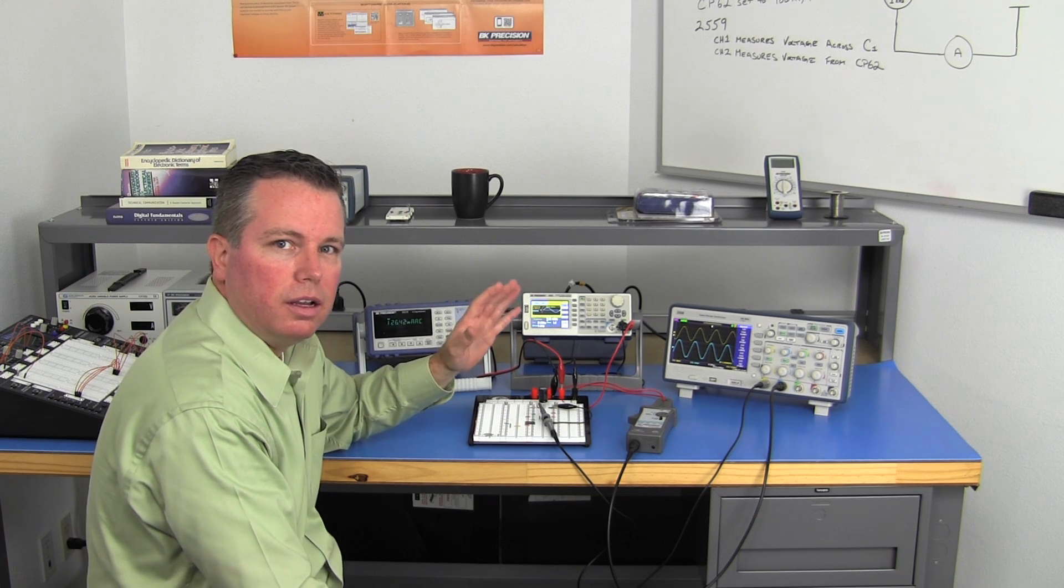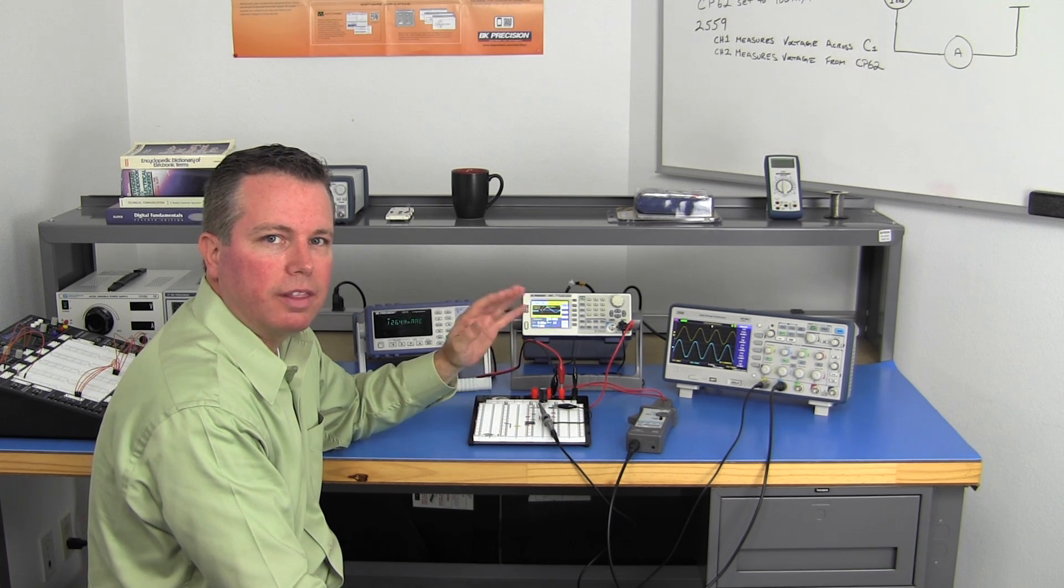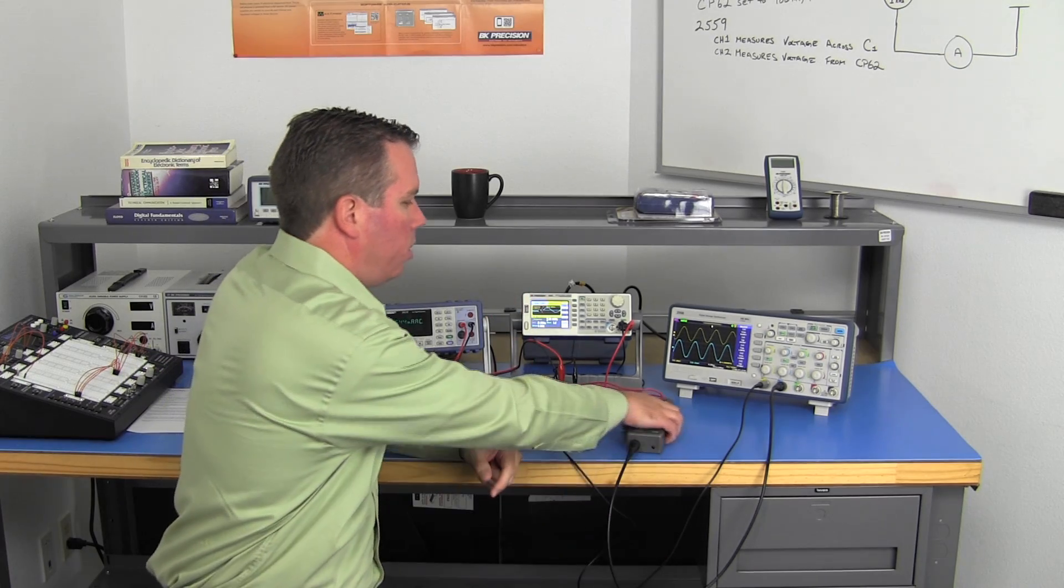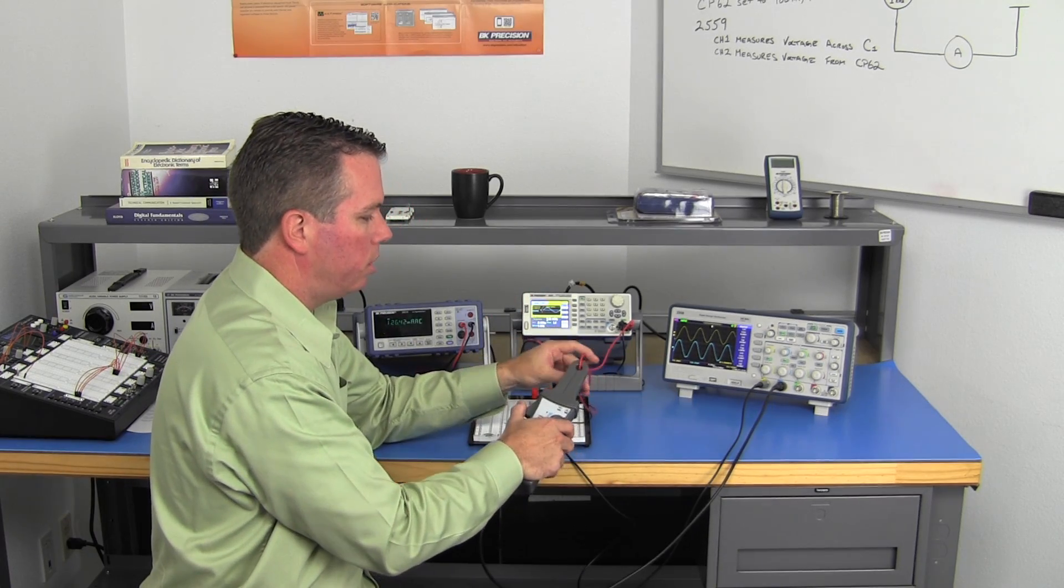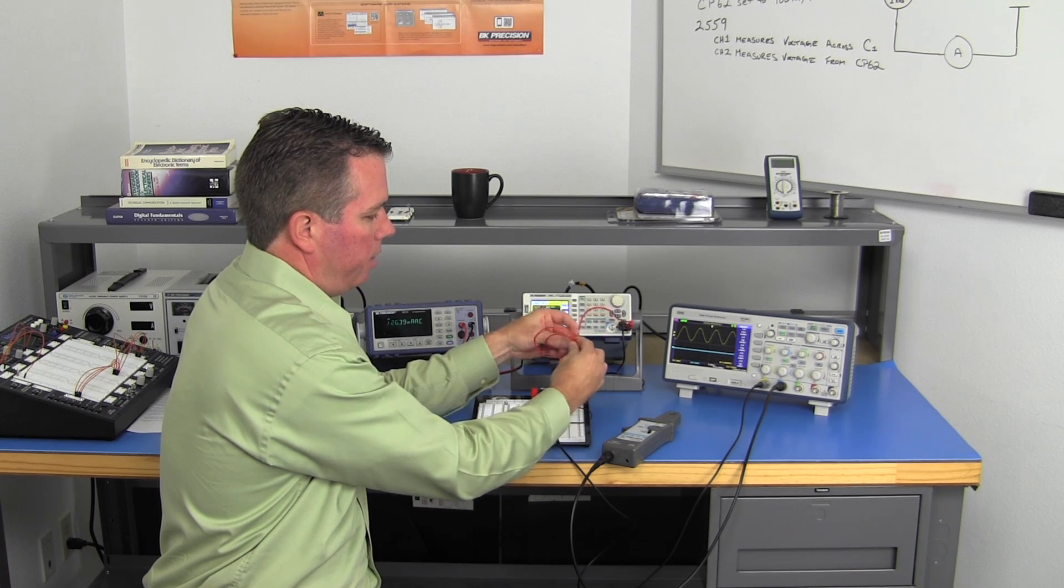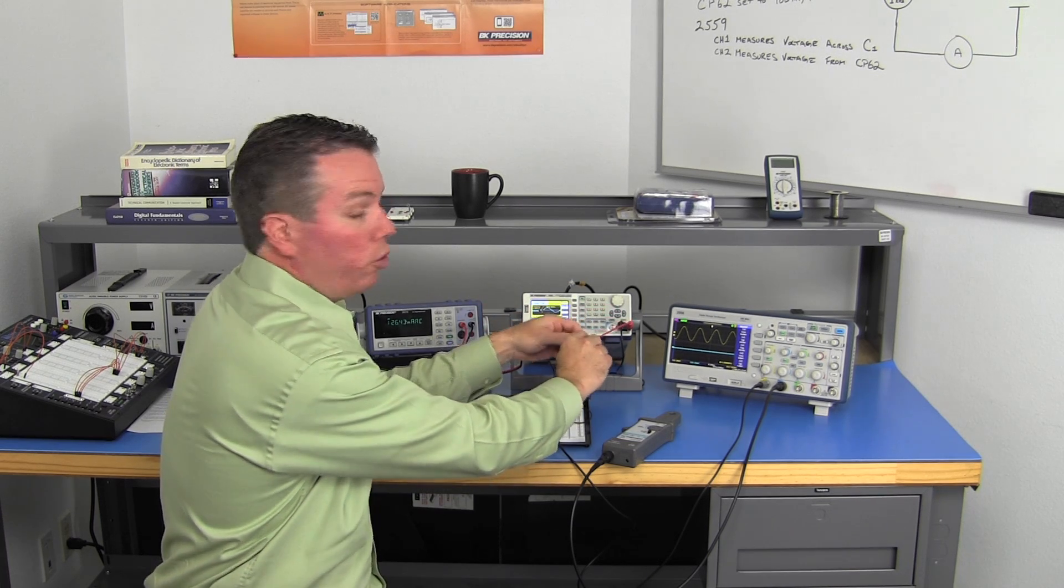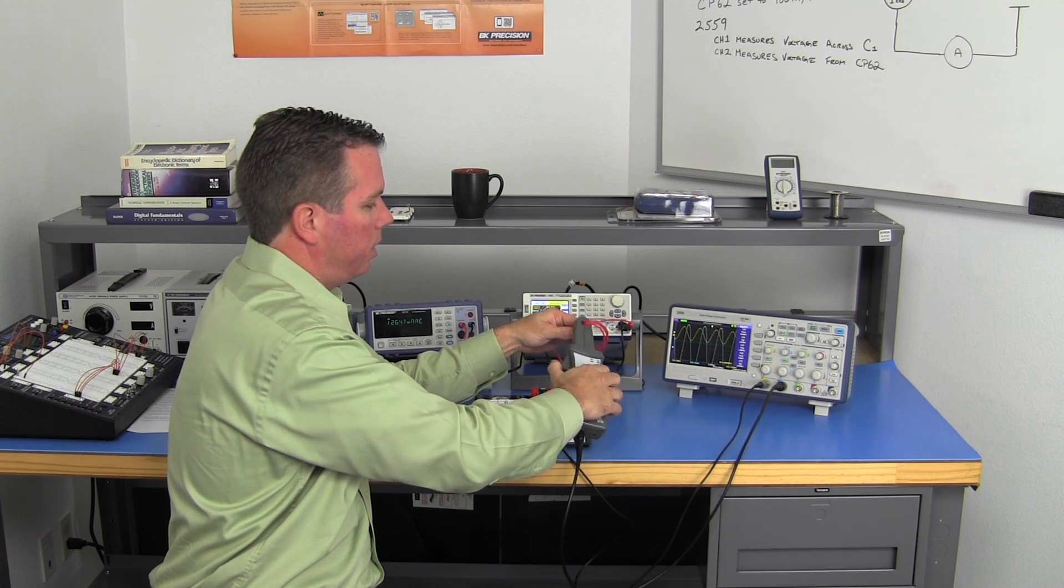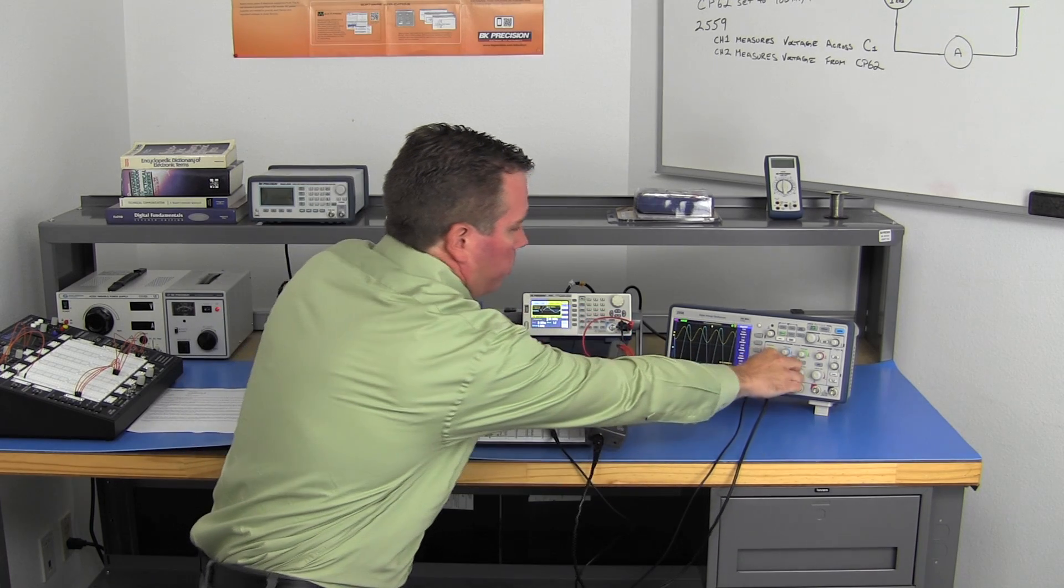If I was measuring a current value that was even less than what I'm measuring here, like around 60 milliamps or whatever it might be, one trick you can do with current probes is you can make loops. And then it will multiply the value that you're measuring.